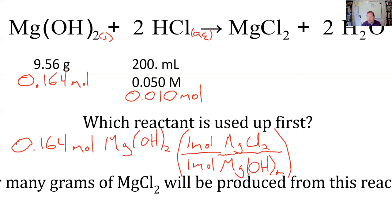So in other cases, it's a 1 to 1 ratio, right, from our balanced reaction, so mathematically nothing's changing. So if we used up all of our magnesium, we could make 0.164 moles of product.